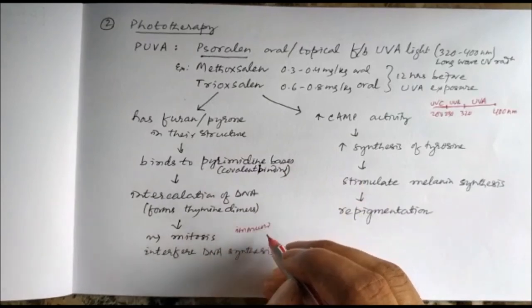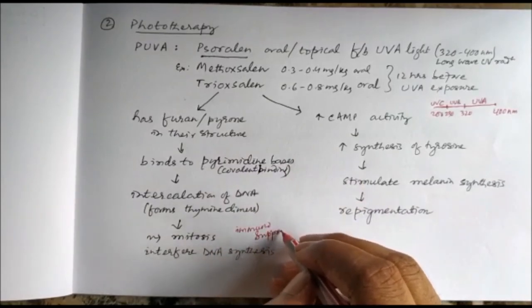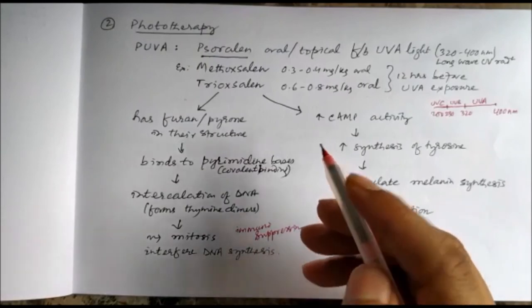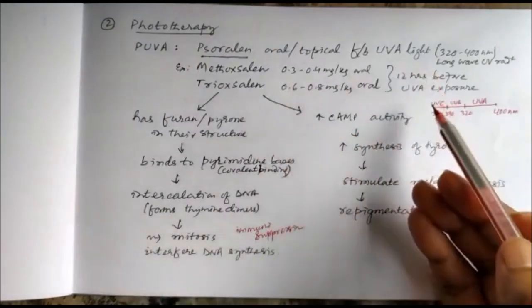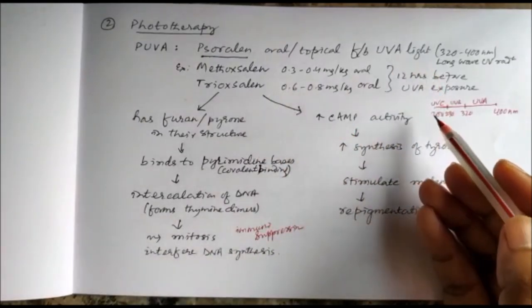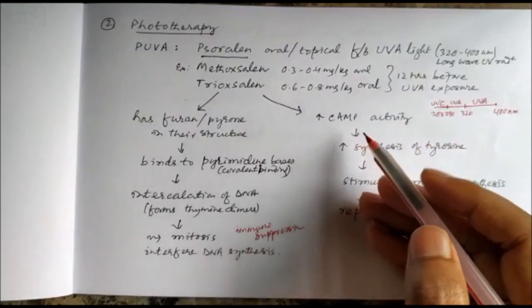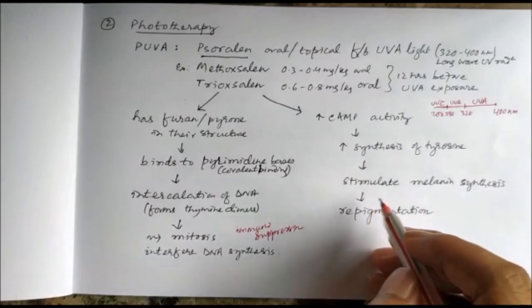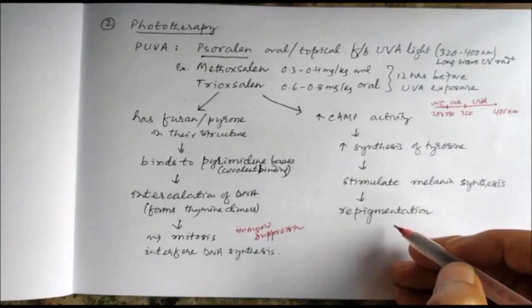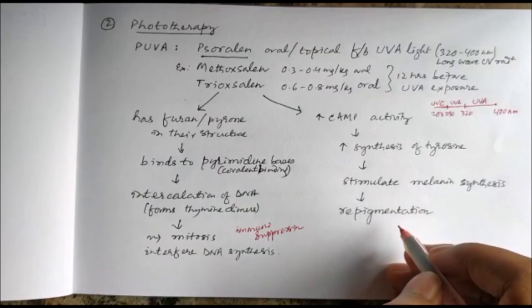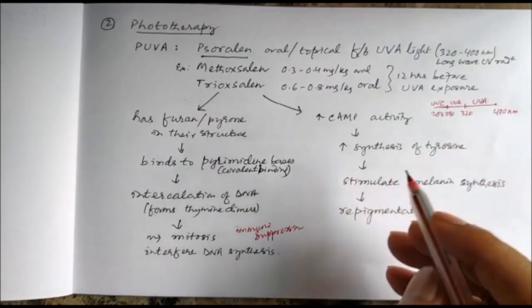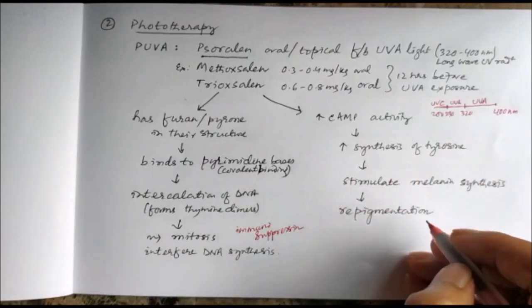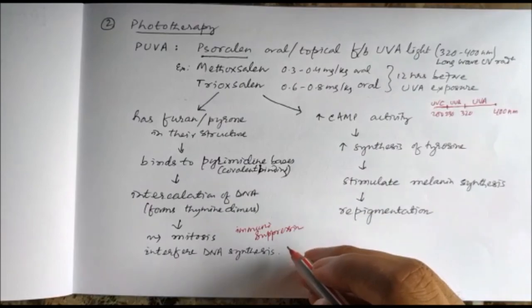The psoralens followed by UVA exposure also increase cyclic AMP activity, which increases the synthesis of tyrosine and stimulates melanin synthesis, causing repigmentation. So this phototherapy can cause repigmentation in addition to immunosuppression.